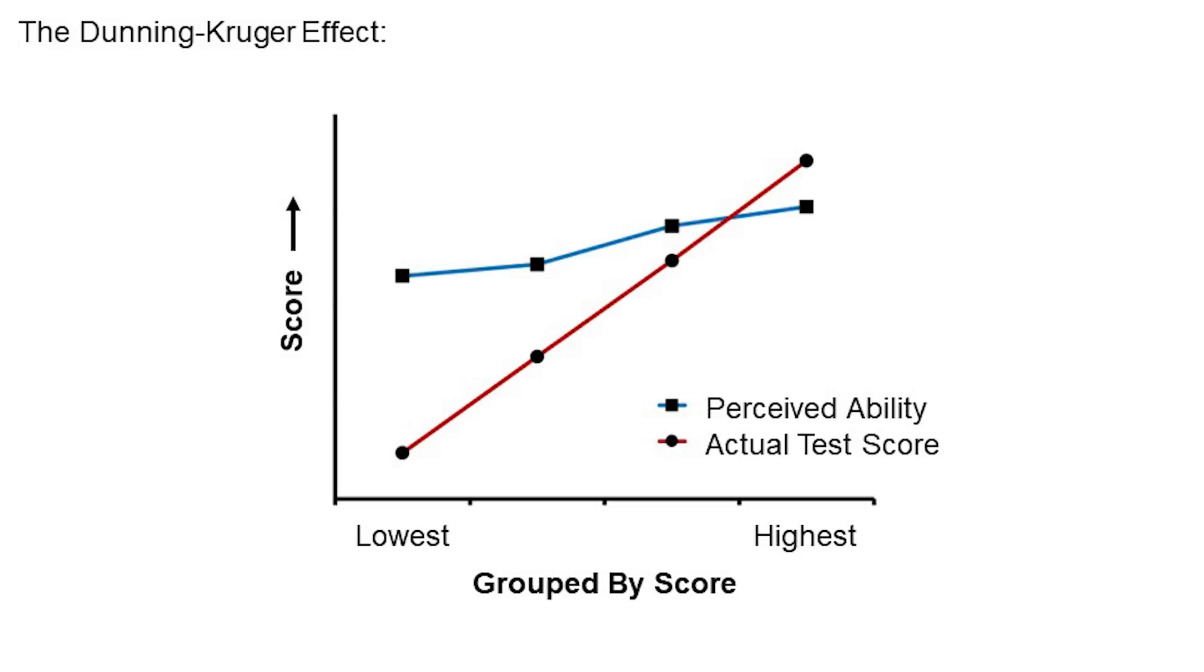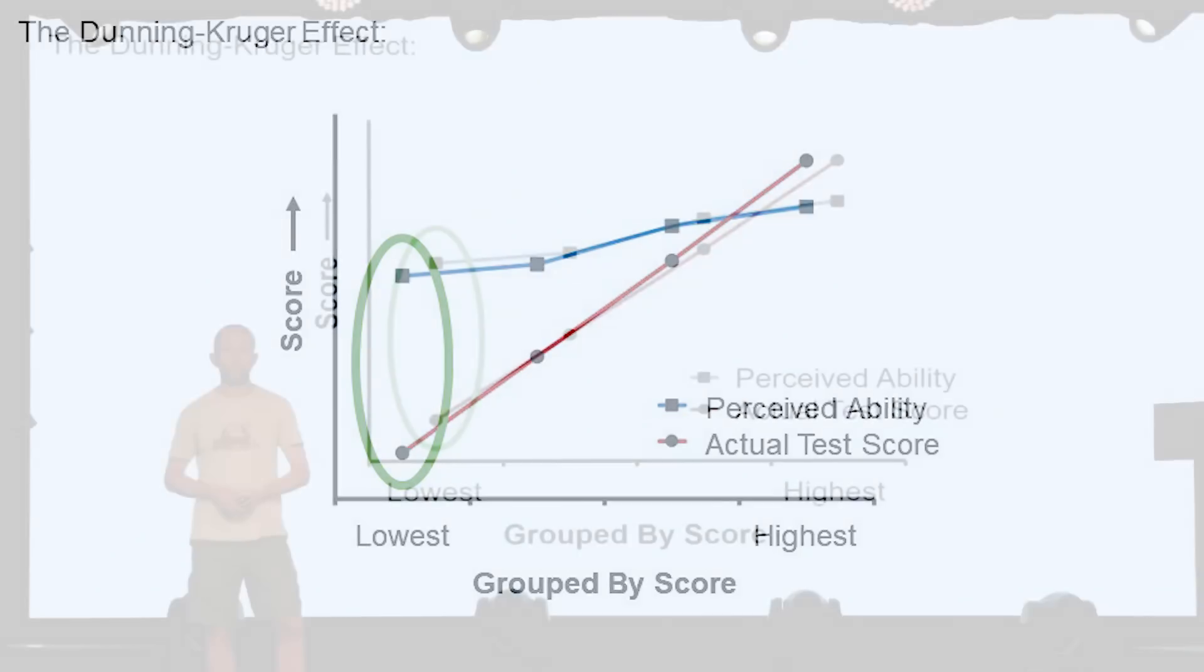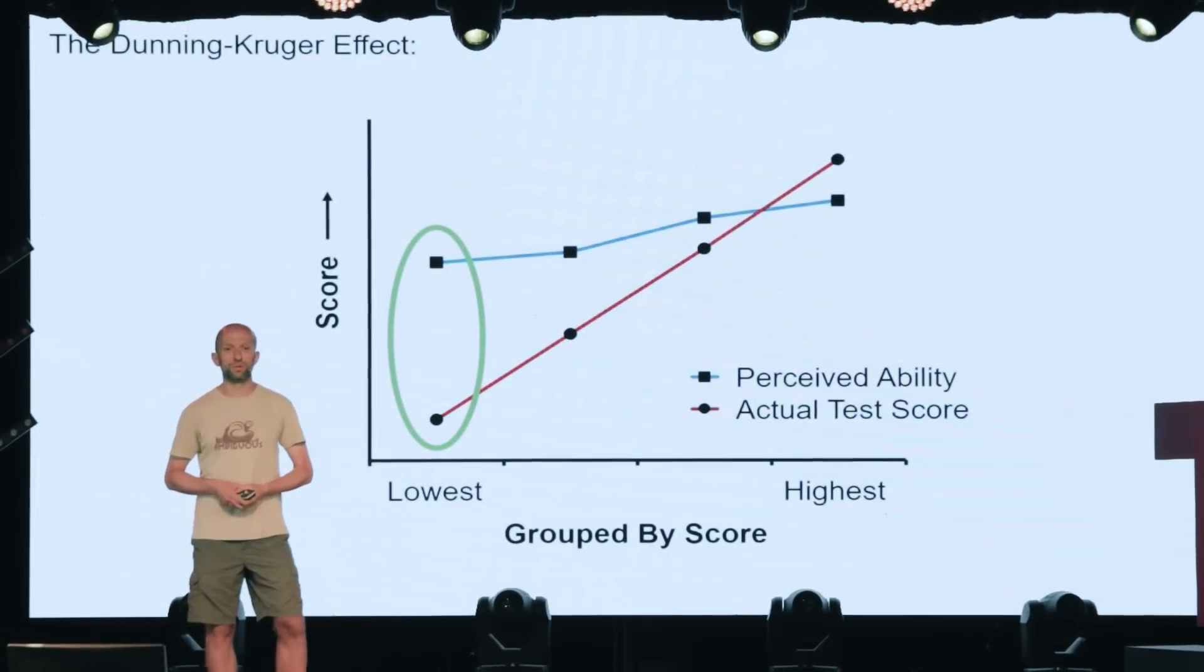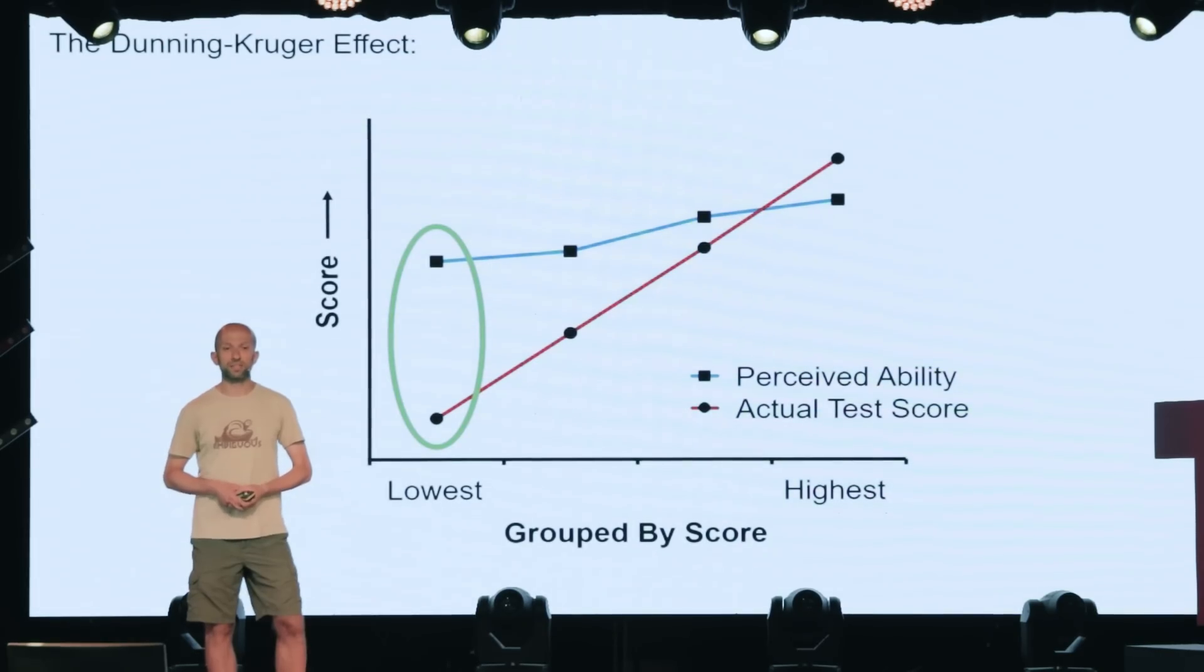Now, what's interesting is the blue, shallower line. This represents their self-estimates, so how good they thought they did on the test. Now, the Dunning-Kruger effect describes how the weakest performers significantly overestimate their performance, shown here in the green oval. The explanation for this, according to Dunning and Kruger, is that insight and ability rely on the same thing.